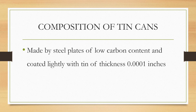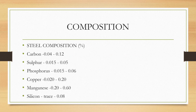Regarding the composition of tin cans: the can used in food industries should be a steel plate with a low carbon content, coated with a slight amount of tin of thickness 0.0001 inches. The steel composition includes carbon, sulfur, phosphorus, copper, manganese, and silicon. Be careful about these contents, as they may appear in your exam.